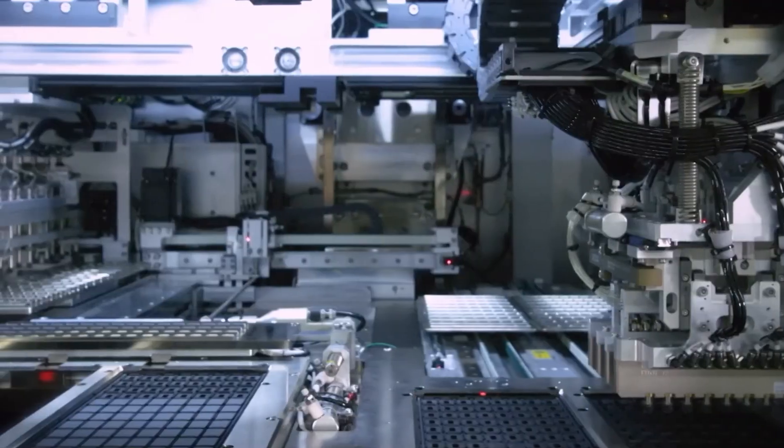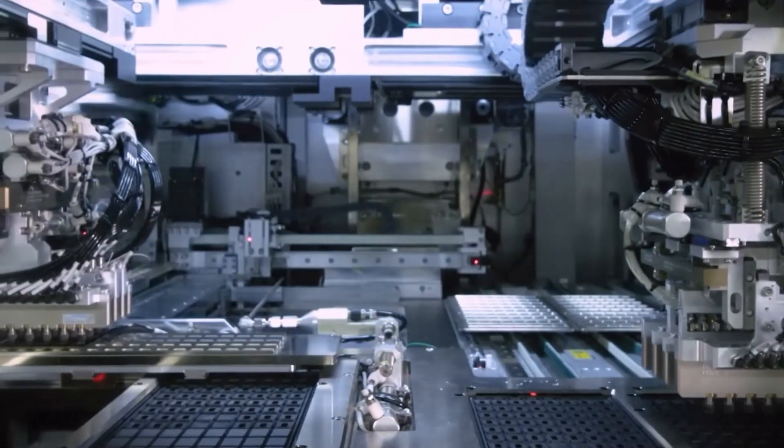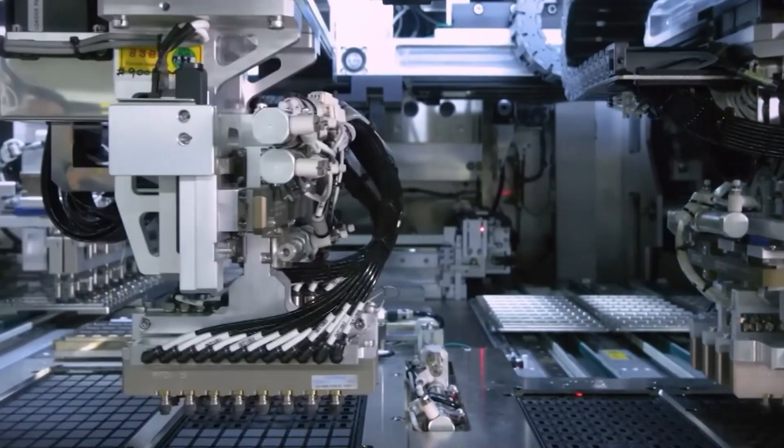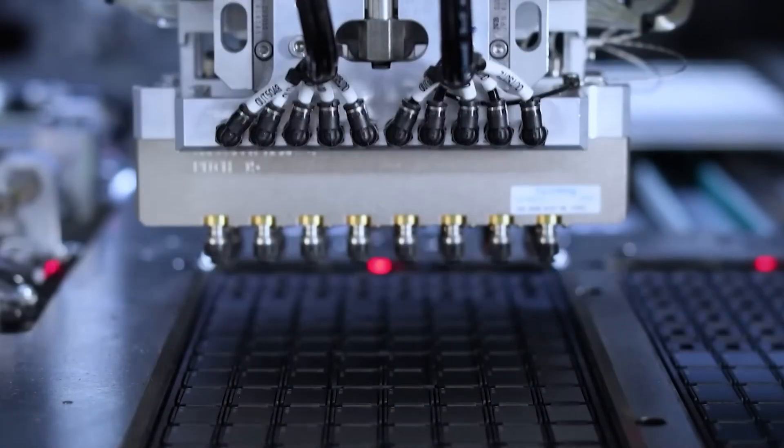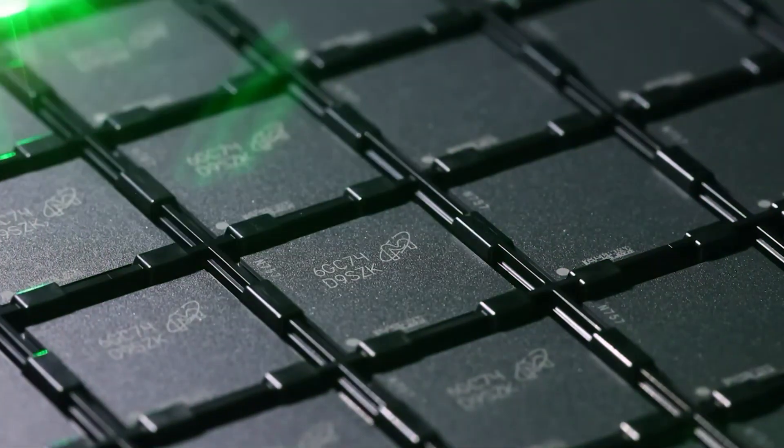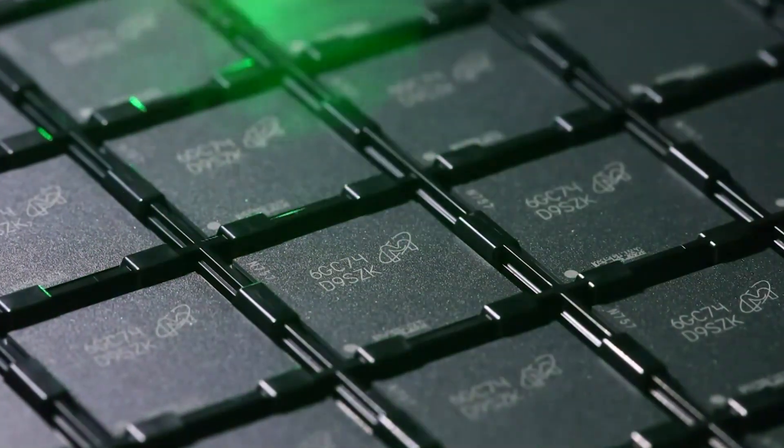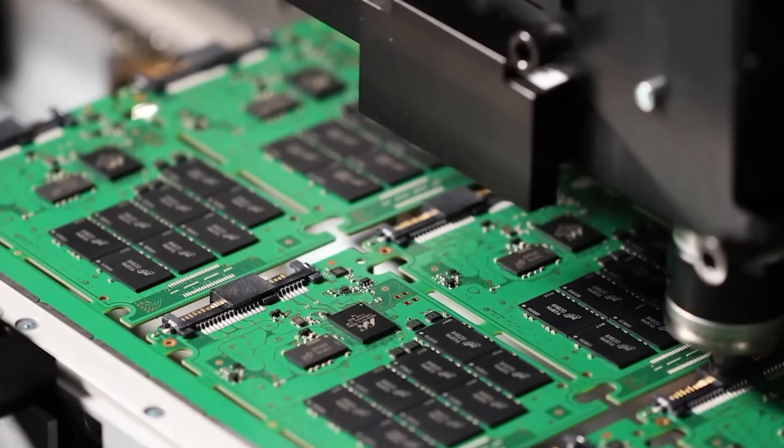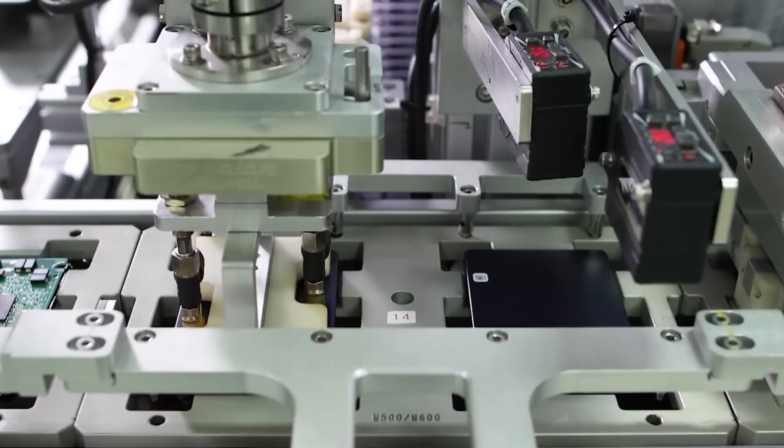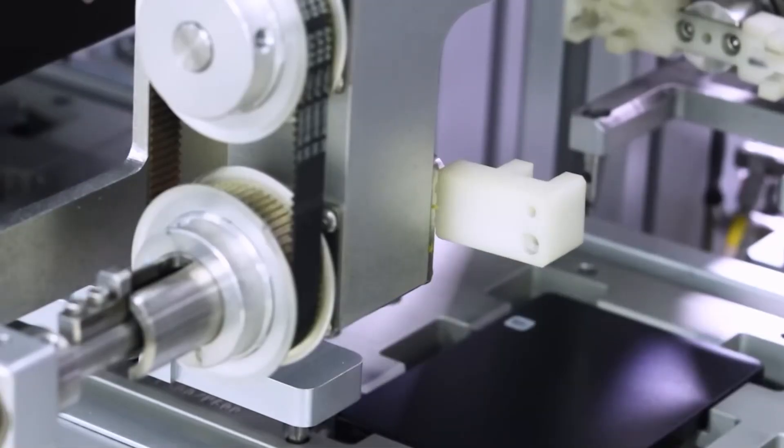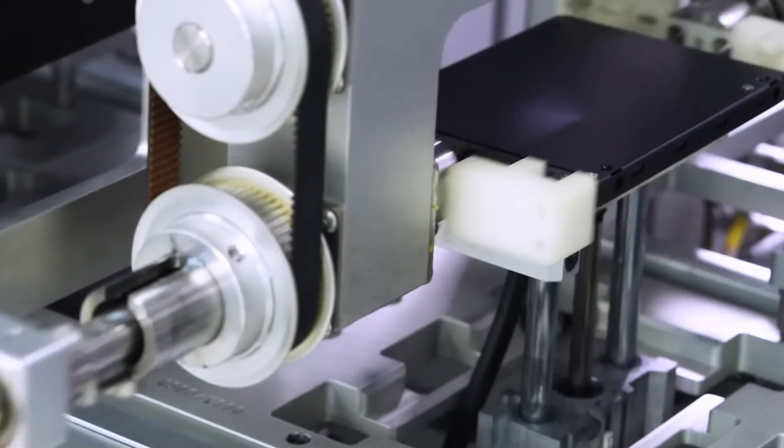The bonding phase uses automated machines so precise, they can place a component within fractions of a micrometer. The chips are carefully aligned with a grid of gold or copper wires, each thinner than a human hair. These wires are responsible for carrying vast amounts of data to and from the chip, ensuring it can handle the blistering speeds that NVIDIA products are famous for.